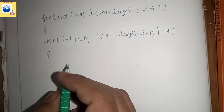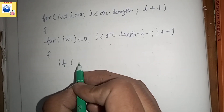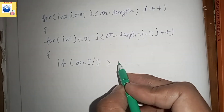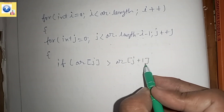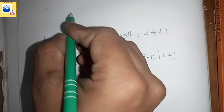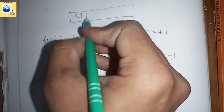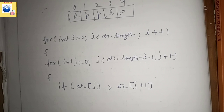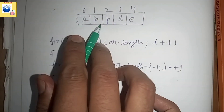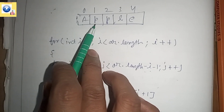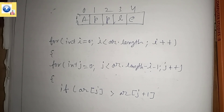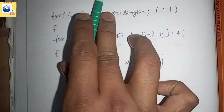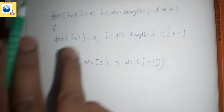Inside the loops we check each character. If the character at position j is greater than the character at position j+1, we perform a swap. For example, with our input 'apple' (indices 0 to 4): we check if 'a' is greater than 'p' - it is not, so swapping will not happen. If the condition is true, then swapping will be performed.